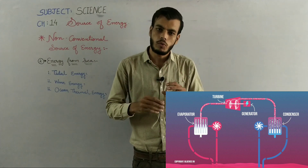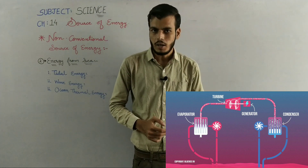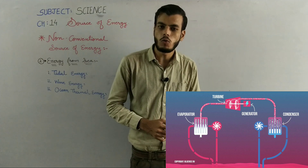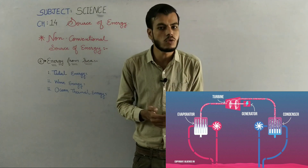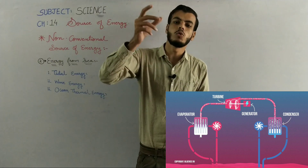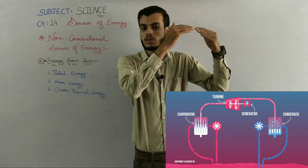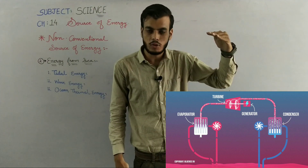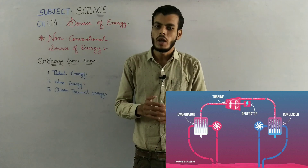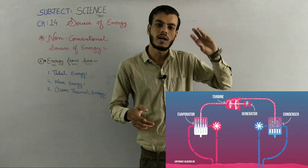अभी जो ammonia की vapor है उसे हम pipe के थ्रू downward भेजेंगे, जहाँ पर cool water available है। इस cold water के थ्रू vapor धीरे धीरे condense होगी और वापिस liquid में convert हो जाएगी। जिसे हम फिर pump के थ्रू ऊपर drill करेंगे। Pump के थ्रू जब ऊपर आएगा तो वापिस hot surface पर आएगा और वापिस vapor में convert होगा।